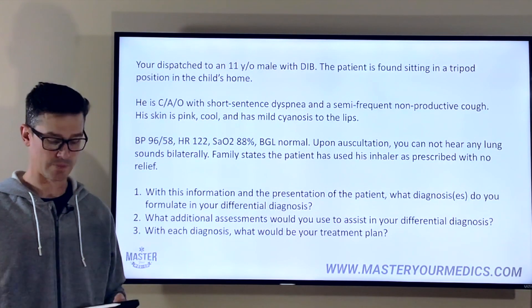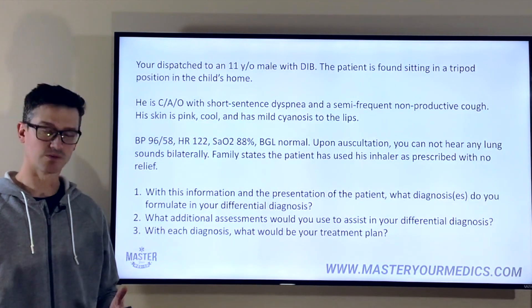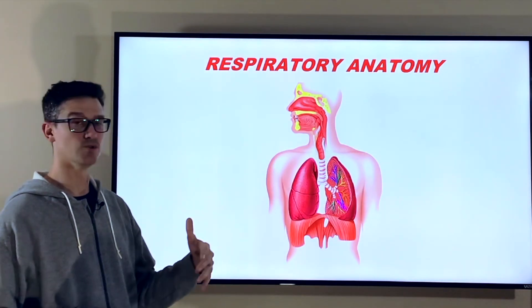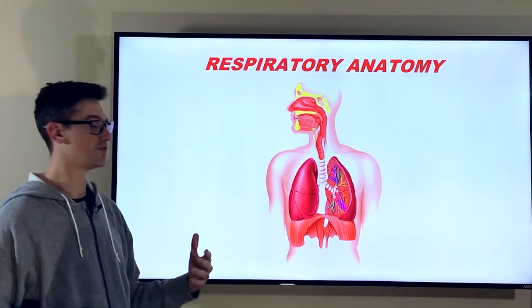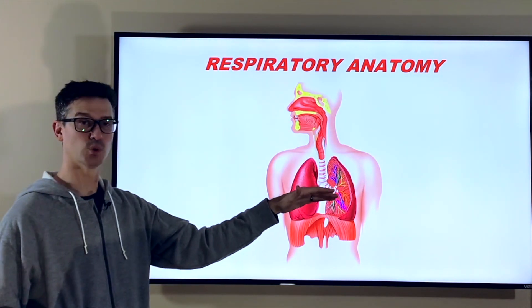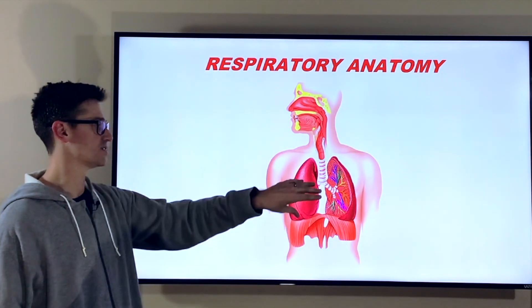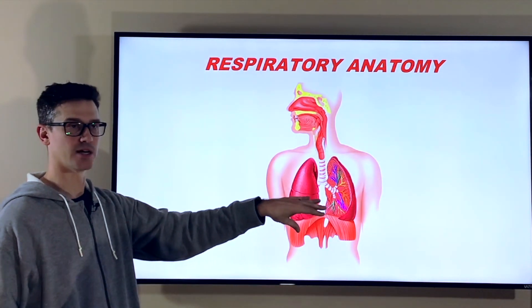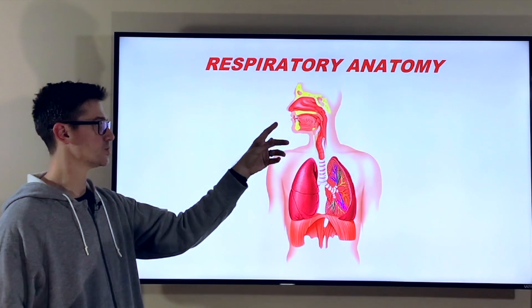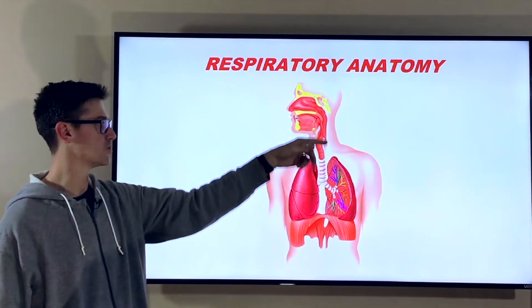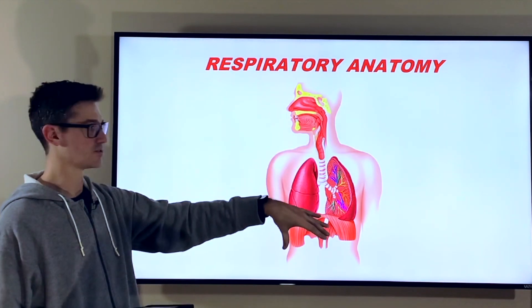Let's start with an airway review. The way we get air into our body for overall gas exchange and ventilation is that the diaphragm pulls down, flattens out, and flexes to create a system of negative pressure inside the body. As it pulls down, that pulls air through our nose, mouth, nasopharynx, oropharynx, and down into our lungs.